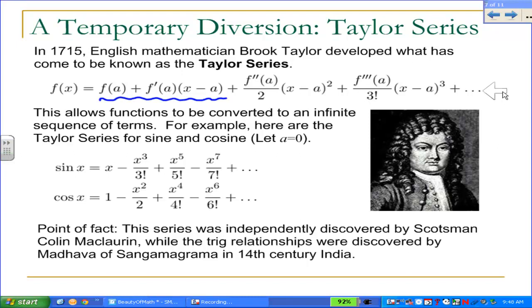By the way, this little exclamation mark is called factorial notation. If you've taken the data management course, you've seen it. So 3! is read as 3 factorial and means 3 × 2 × 1 = 6. The next term in the series would have 4! = 24 in the denominator, then 5! = 120. Numbers get big pretty quickly.